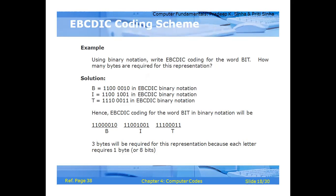Let us go with an EBCDIC coding scheme example. Data should be stored in an 8-bit scheme. Three bytes will be required for a three-character representation because each letter requires one byte.